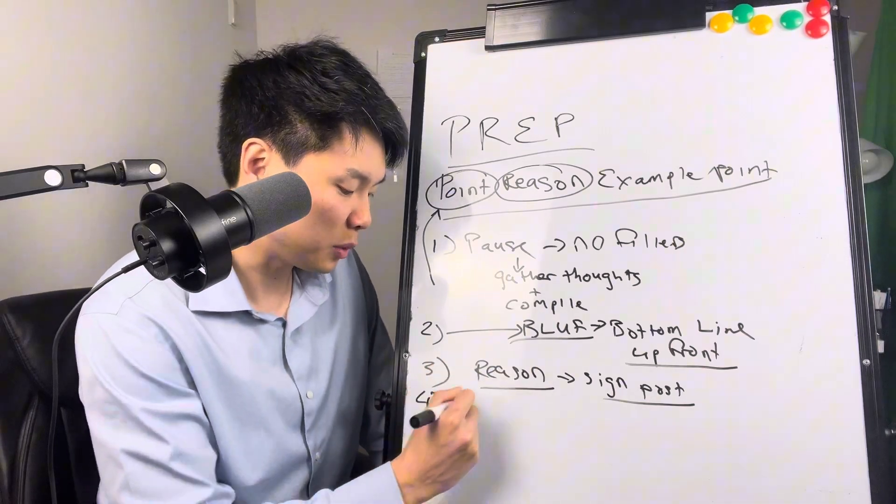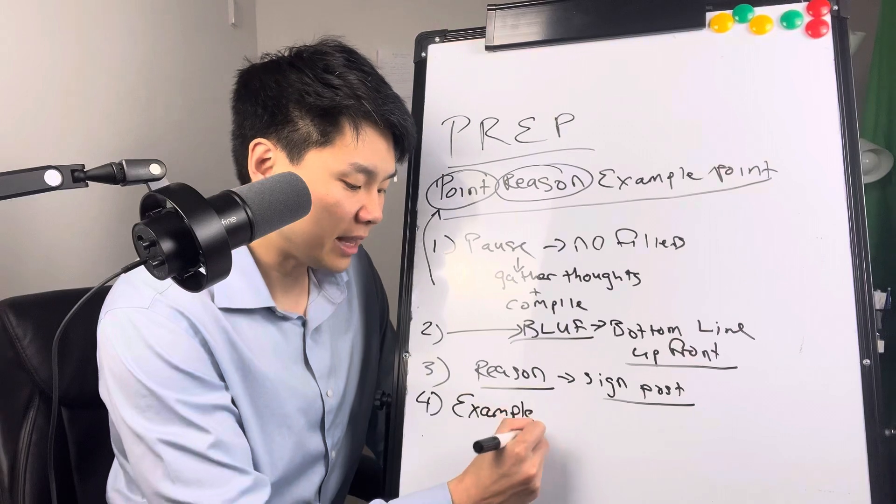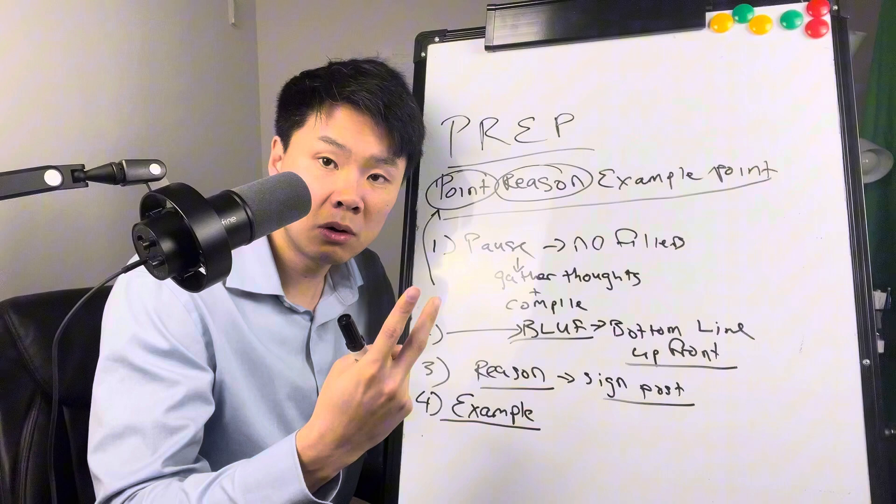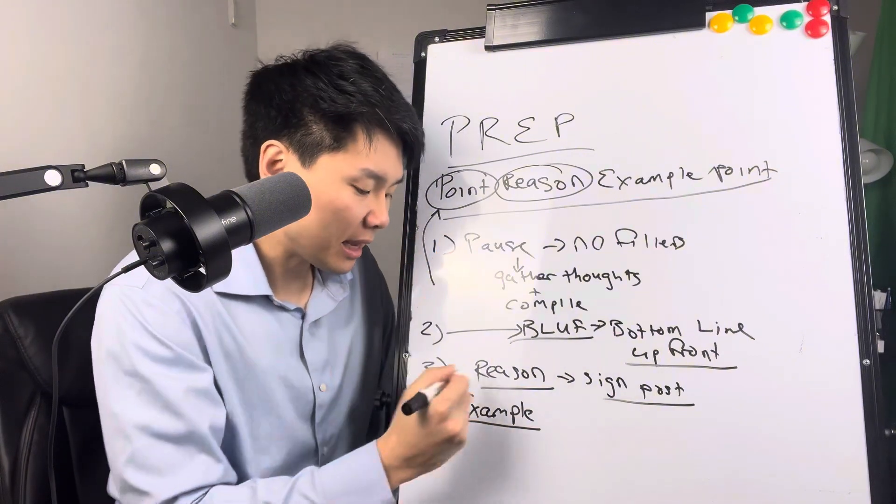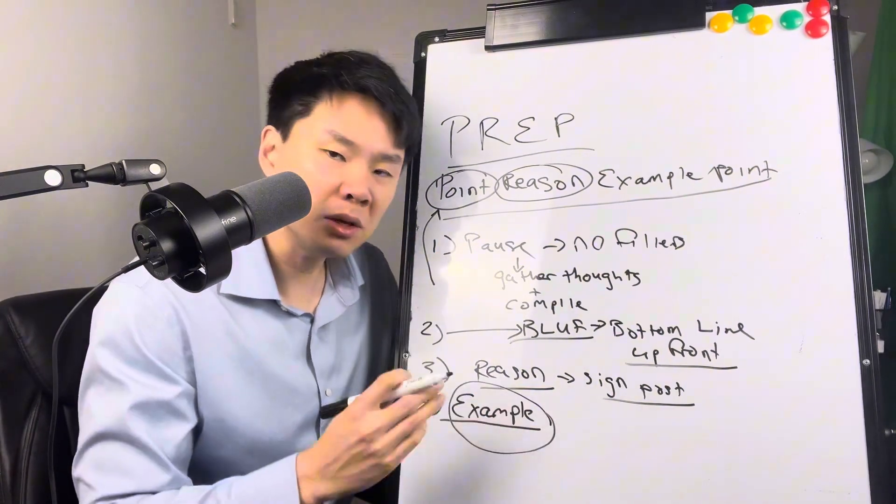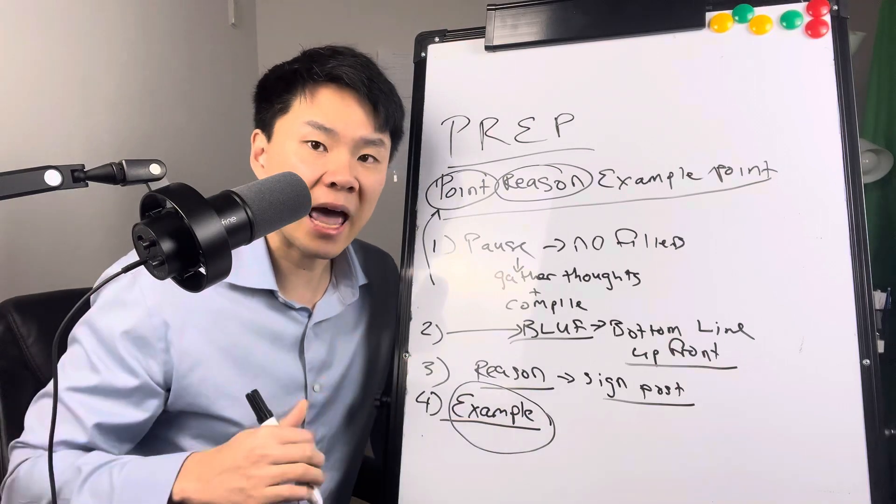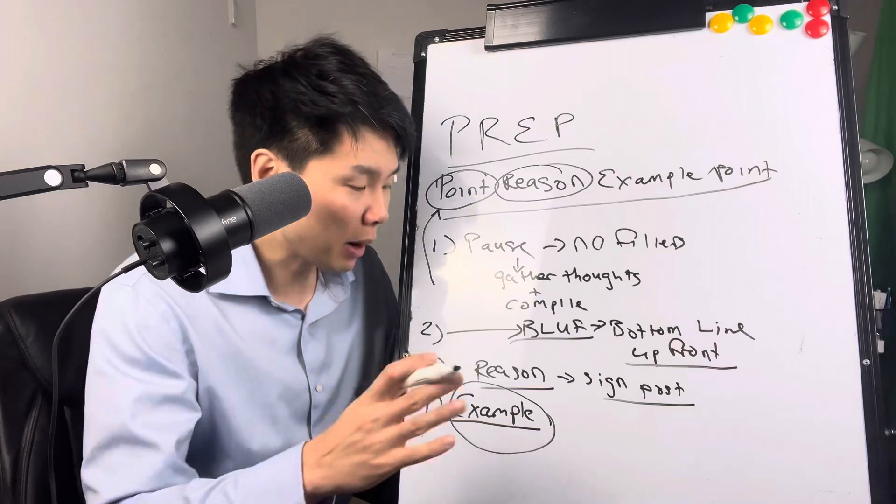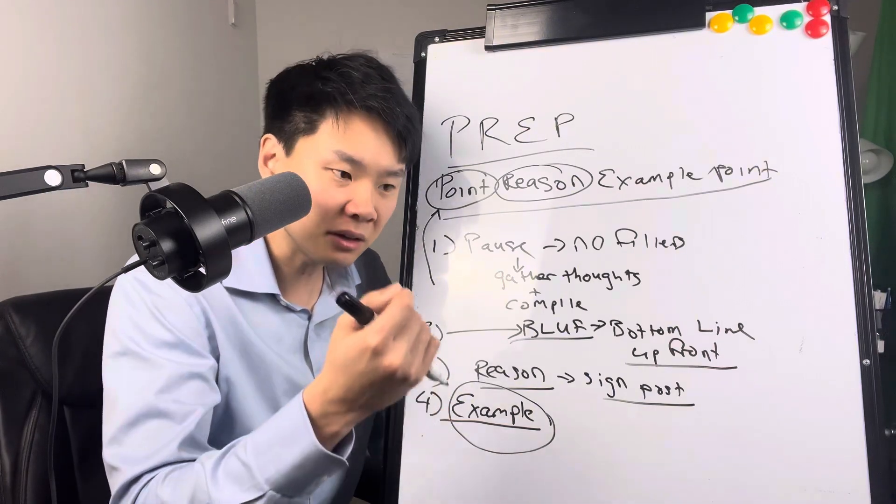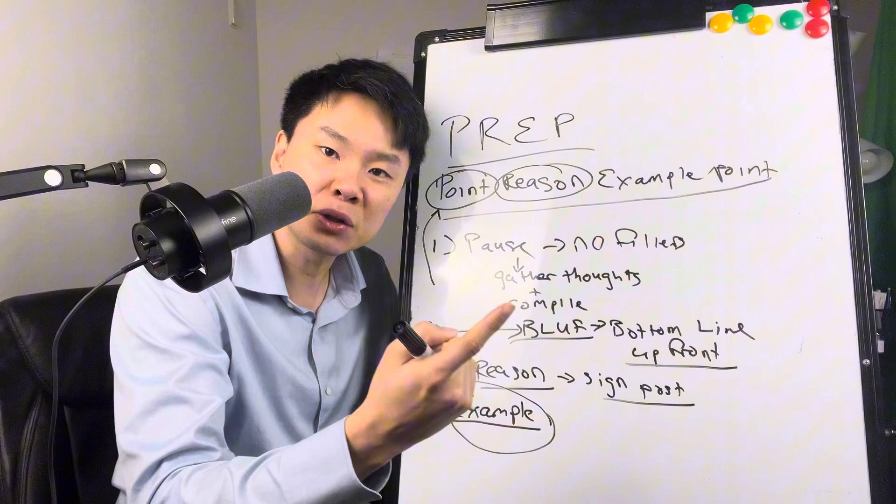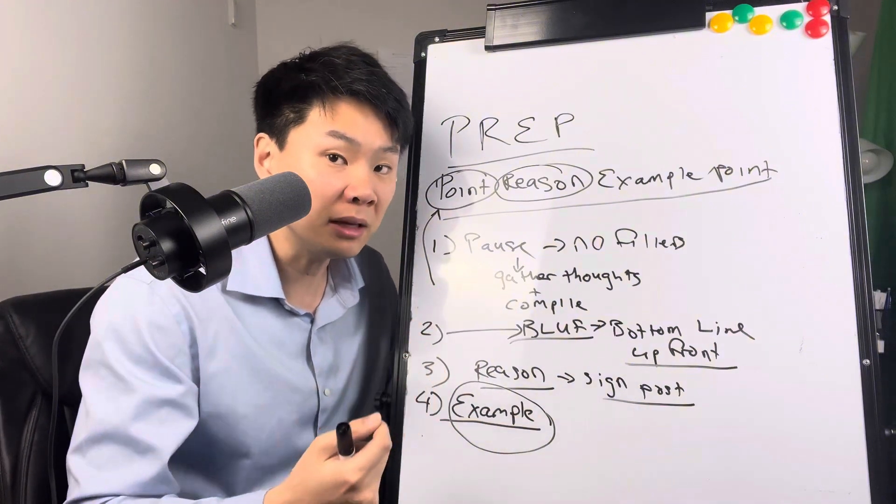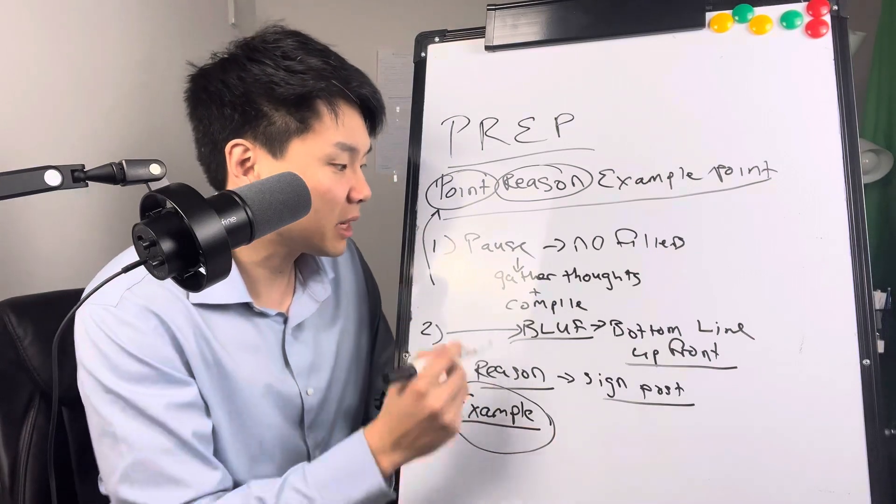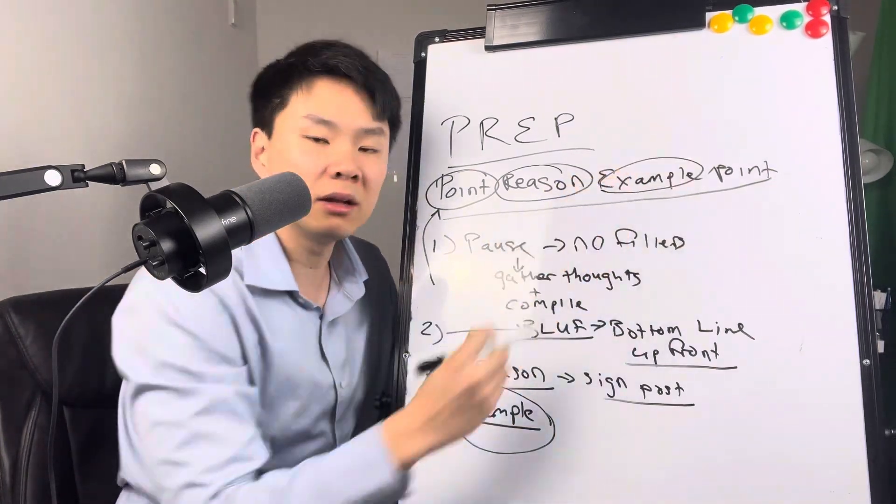So when you give that reason, we now segue to the example. And the example can be either a data point, an anecdote, or both. And the idea behind the example is that it activates both the left and right side of your audience's brain. When you give a data point, it clearly appeals to their logical, rational side. When you give them a story, it appeals to their emotional side.